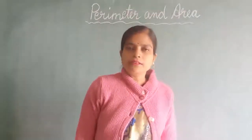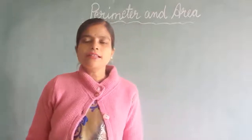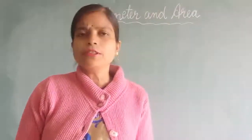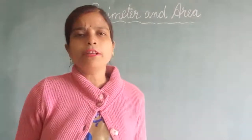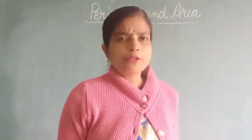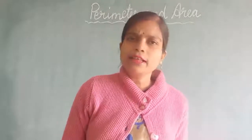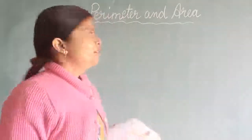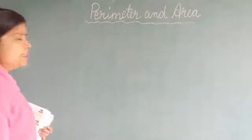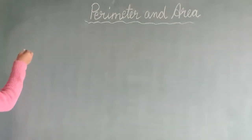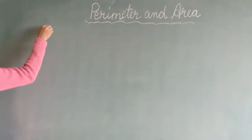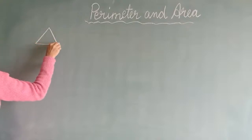Welcome to the class. Today, in the last lecture, we have learnt to find out the perimeter of a simple figure. For example, square, rectangle and triangle. These are the simple figures, so I am taking this one triangle. That is a simple figure only.